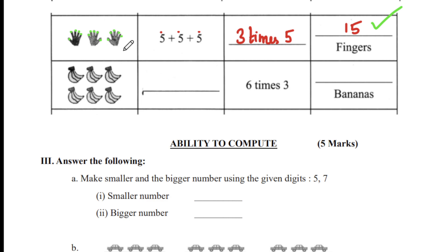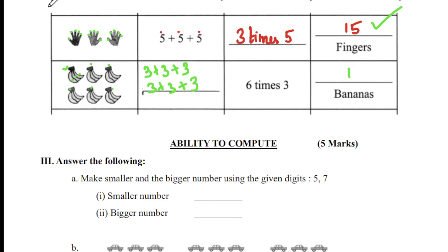Next, we have bananas. How many bunches are there? Counting gives six groups, and each group has three bananas. So you write three plus three plus three plus three plus three plus three — that is six times three, which equals 18. Counting all bananas one by one also gives 18 bananas.